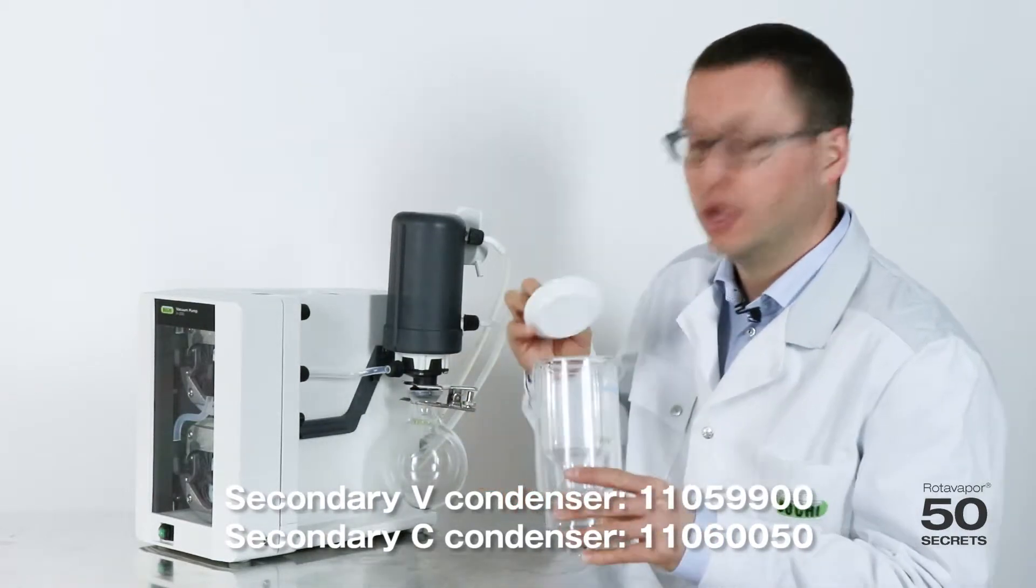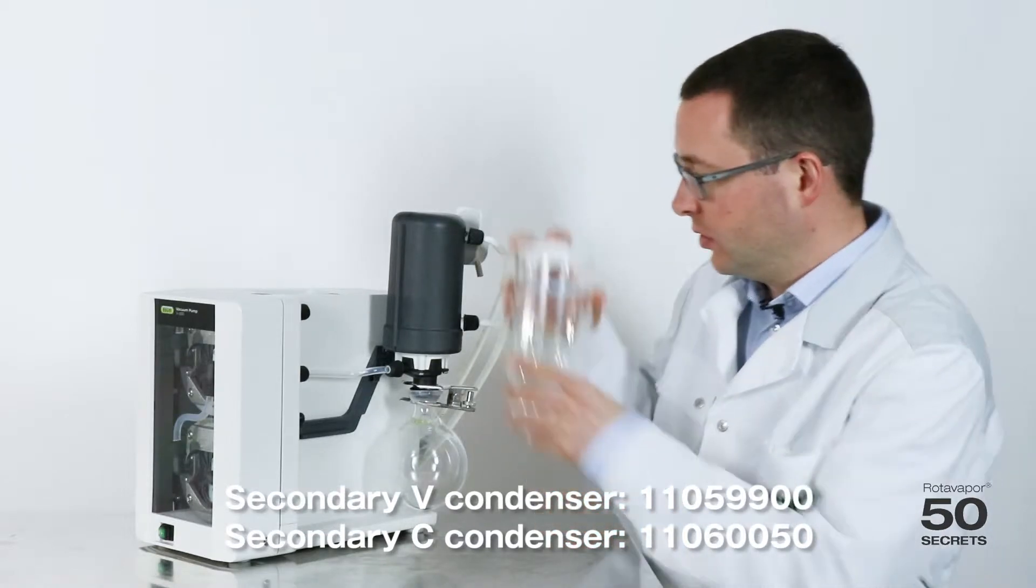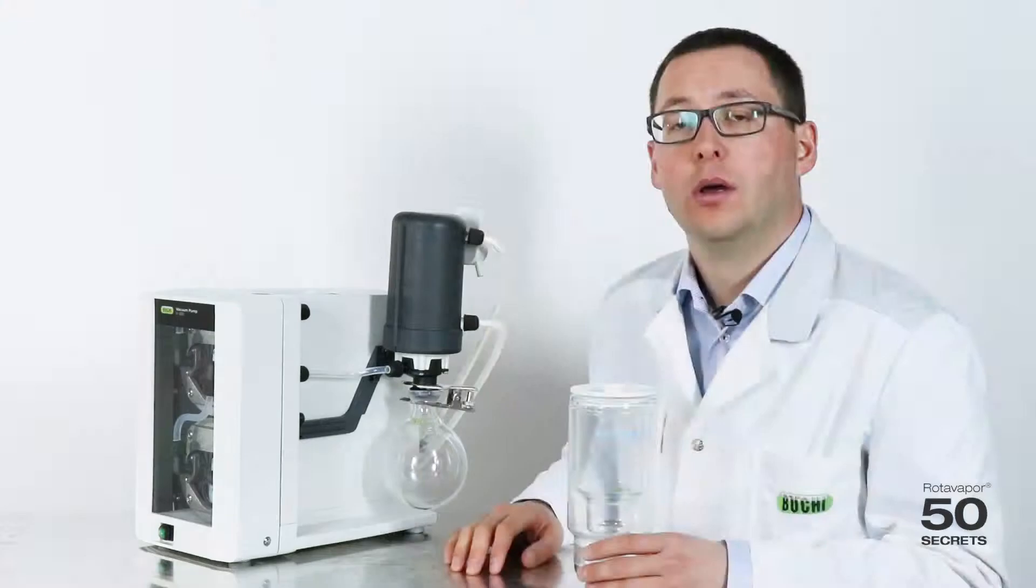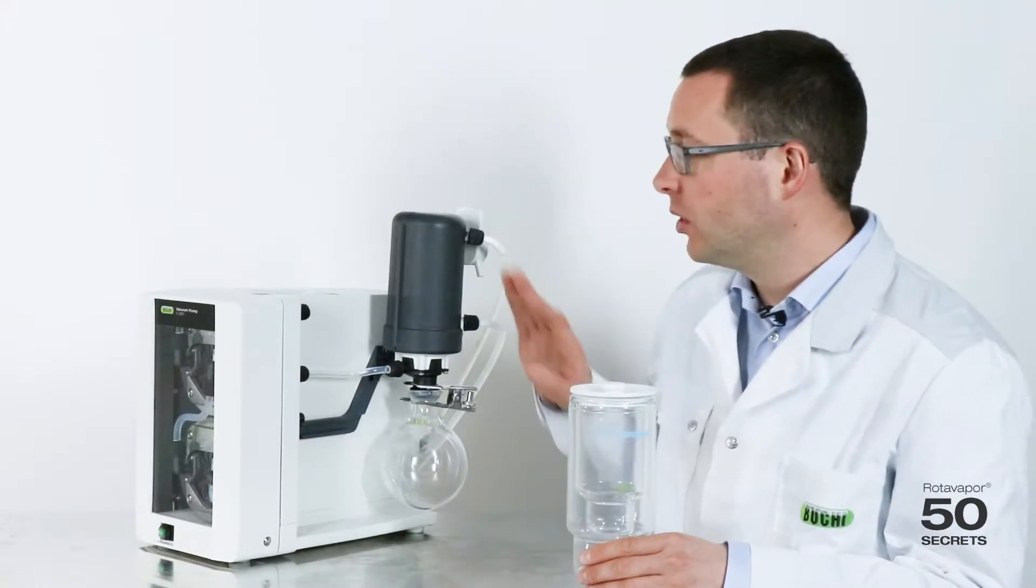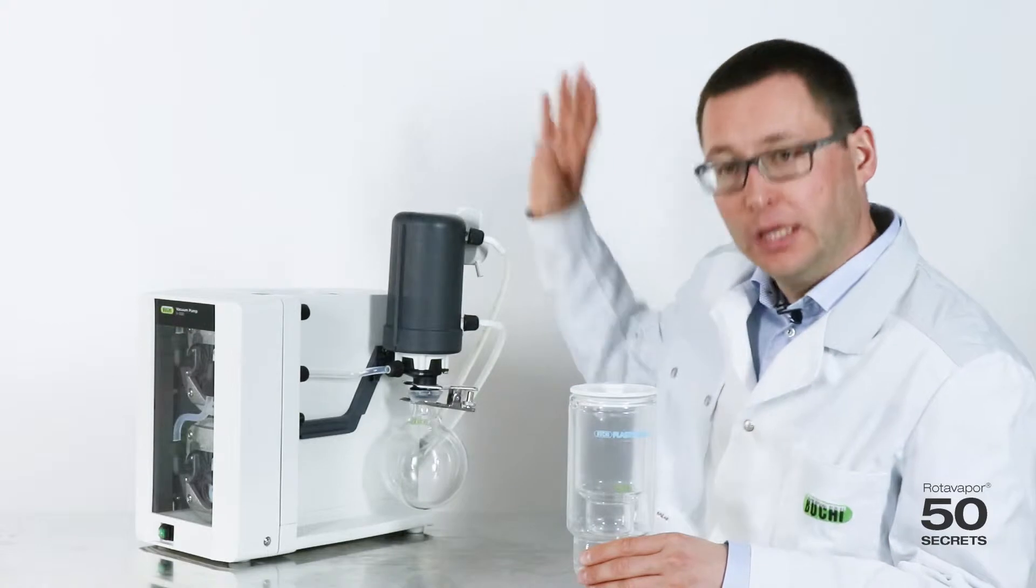We use this for dry ice, for example. It will just be mounted like this over here. Both secondary condensers are there for one reason. We don't want to have emissions into the atmosphere.